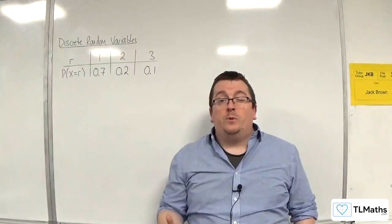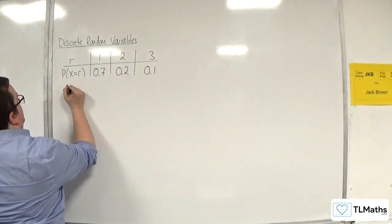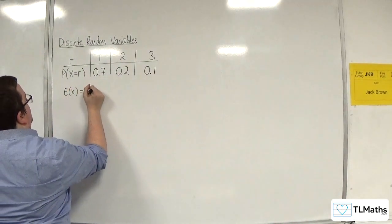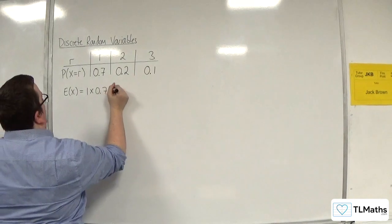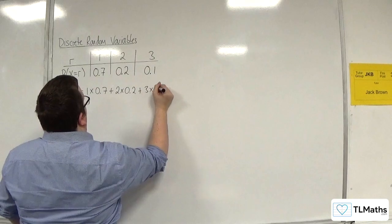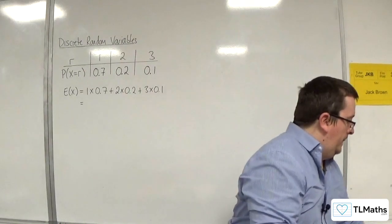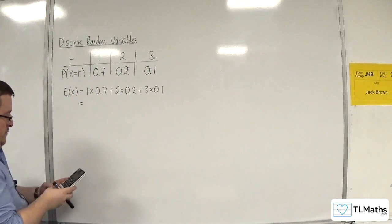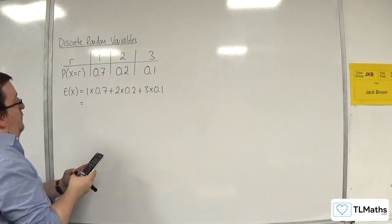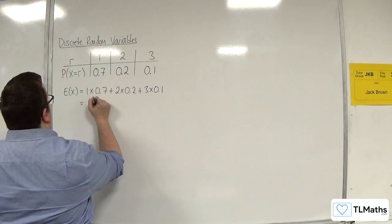The first thing I want to do is work out var of x. So I'm going to need E of x, which is 1 times 0.7, plus 2 times 0.2, plus 3 times 0.1. So 0.7 plus 0.4 plus 0.3, which is 1.4.